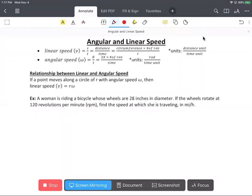In this video we're going to go over angular and linear speed. For our example, a woman is riding a bicycle whose wheels are 28 inches in diameter. This tells us that 14 inches is our radius.